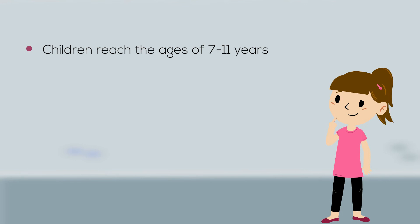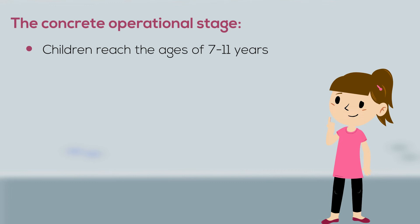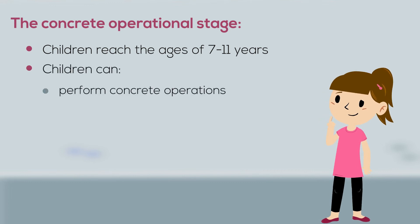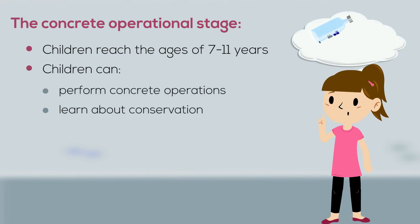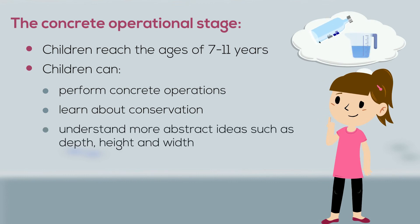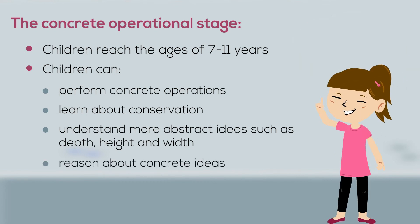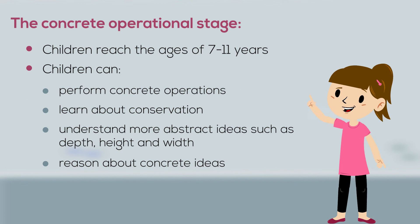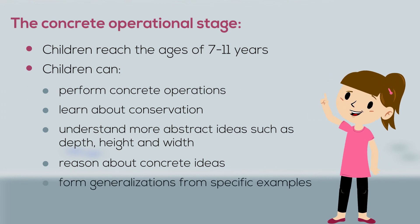When children reach the ages of seven to eleven years, they are in the concrete operational stage of development and can perform concrete operations and learn about conservation. They start to understand more abstract ideas such as depth, height, and width. They learn to reason about concrete ideas and can form generalizations from specific examples.